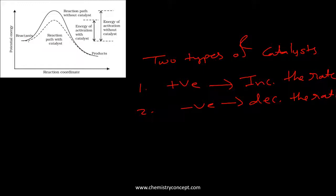Suppose we have a reaction pathway here. This is the potential energy and this is the reaction coordinate. This is the reactant over here and this is the product. This is the catalyzed path. What will happen with a positive catalyst? That will decrease the activation energy. This is the activation energy when it is catalyzed, and this is when it is non-catalyzed.